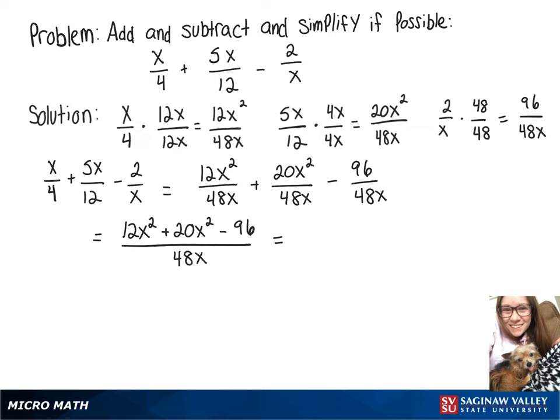Now to simplify, the first thing I'm going to do is combine our like terms on top. So since we have 12x squared and 20x squared, those will combine into 32x squared, and we still have our minus 96 over 48x.